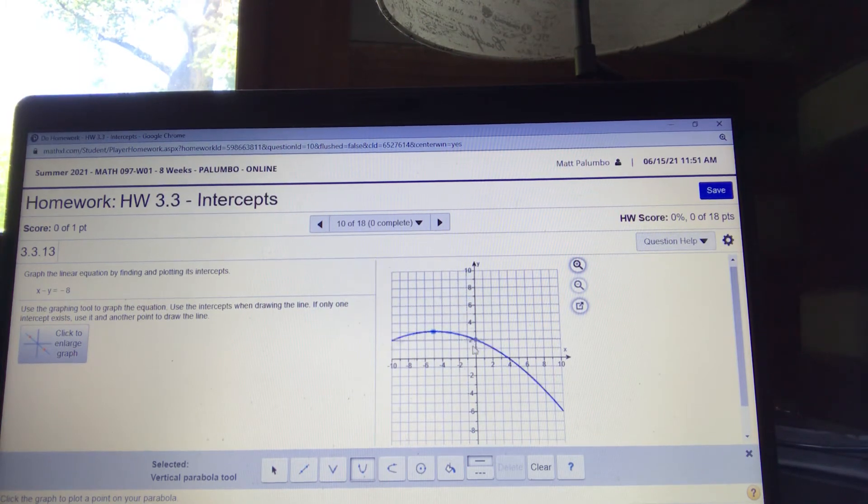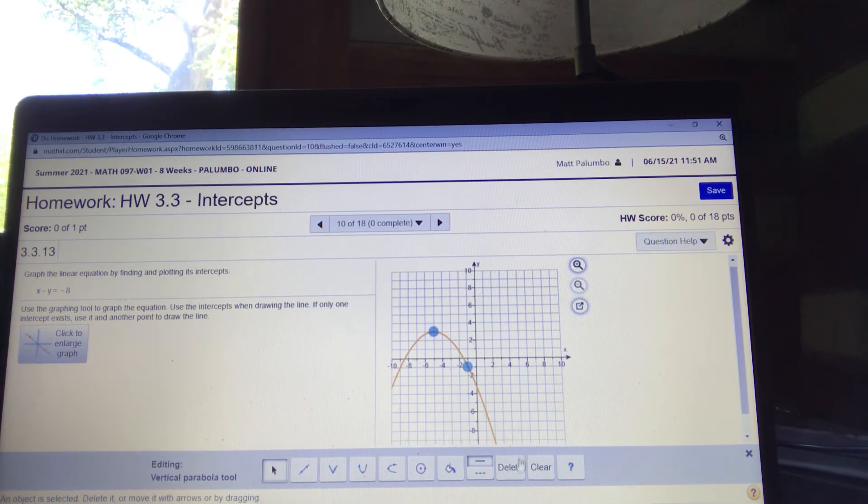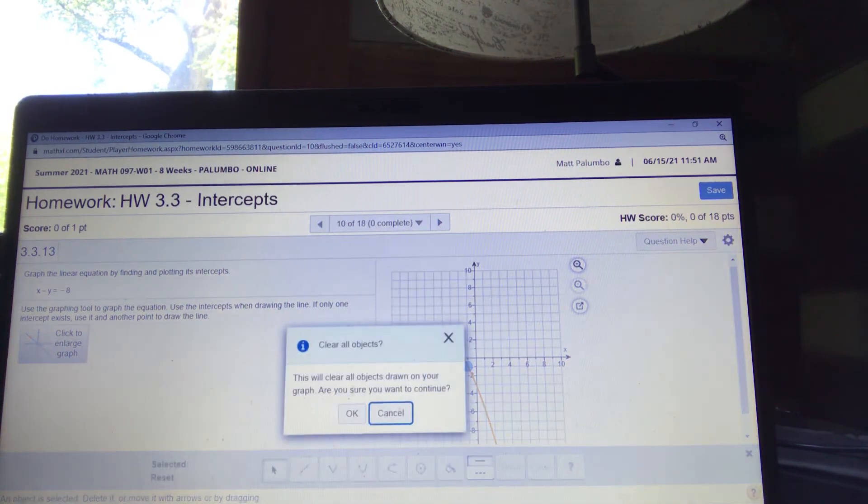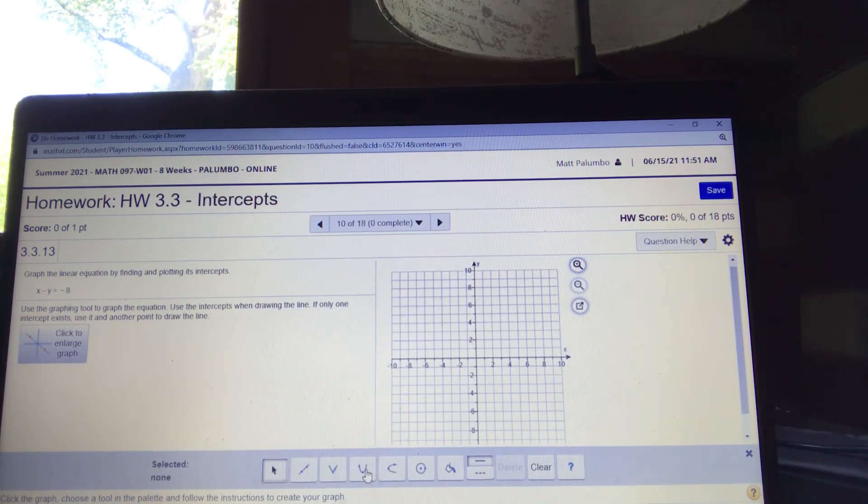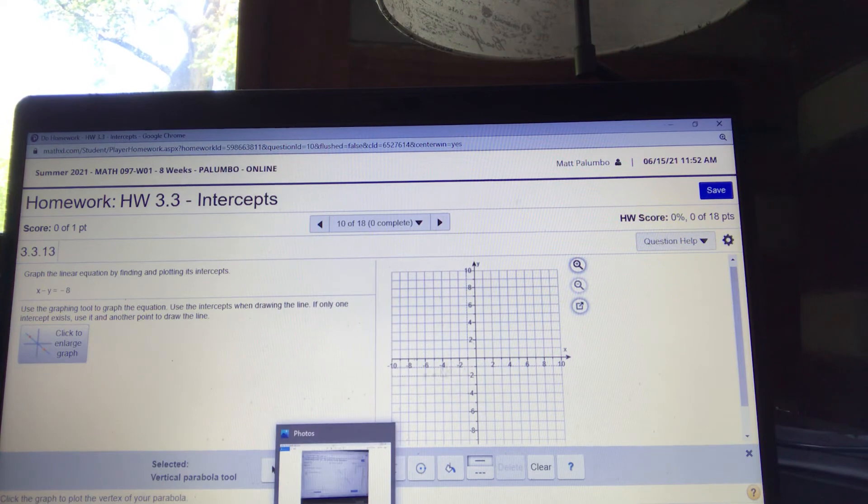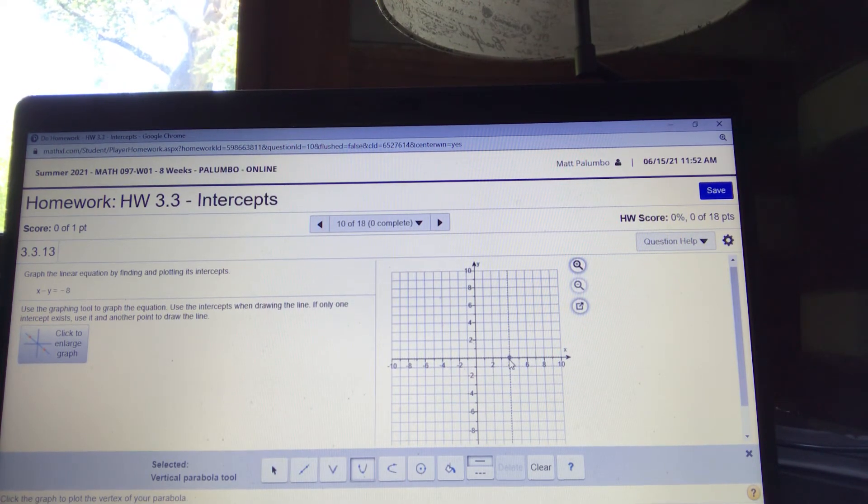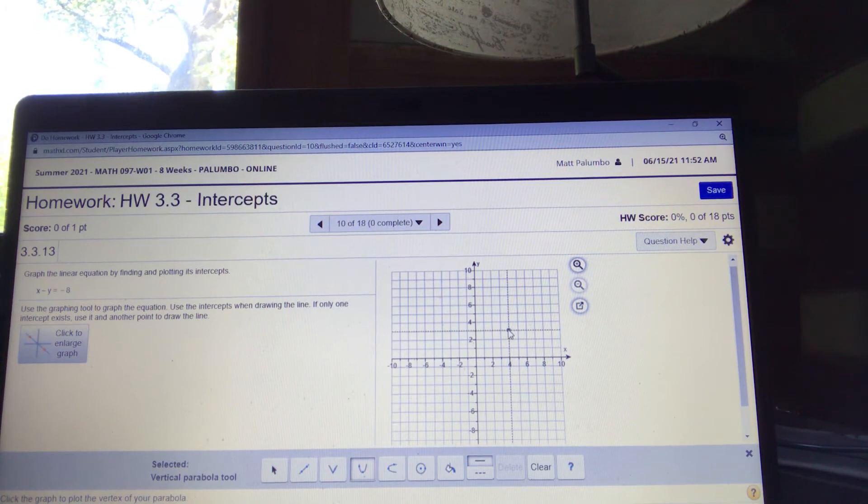Like a big smiley face or a big frowny face? And your second point will set it. So let me clear this. All right. I grab my parabola tool. x minus four squared plus three. That's going to go four to the right, the vertex. Four to the right. And three up. One, two, three. That's the vertex.